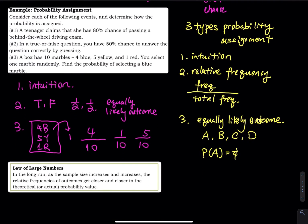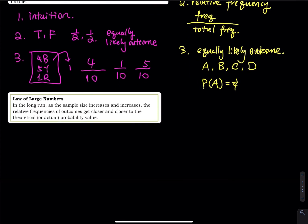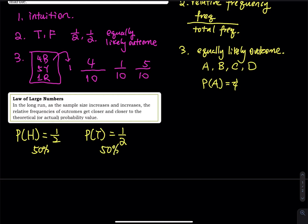The next concept is the law of large numbers. In the long run, as the sample size increases, the relative frequency of outcomes gets closer and closer to the theoretical or actual probability. Let's use the easiest example — flip a coin. The probability to get a head is one half and the probability to get a tail is one half, so it's 50-50. Based on this, let's say I flip a coin 10 times. You might expect to get exactly five heads and exactly five tails every single time.